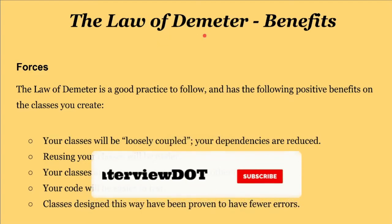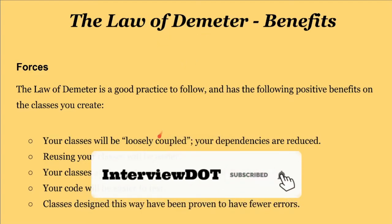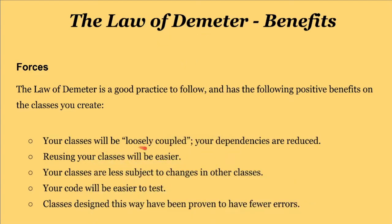We saw the basics of the Law of Demeter. Let's see the benefits. Your class will be loosely coupled because you have more control and your dependencies are reduced. Reusing of classes will be easier. Your classes are less subject to changes in other classes — when someone changes something, it should not affect your class. It also makes it easy to test your code, and classes designed this way are proven to have very few errors.